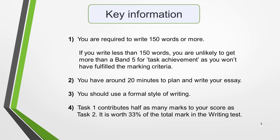First, you're required to write 150 words or more. If you write less than 150 words, you are unlikely to get more than a band 5 for task achievement, as you won't have fulfilled the marking criteria. Second, you have around 20 minutes to plan and write your essay. Third, you should use a formal writing style. And fourth, task 1 contributes half as many marks to your score as task 2, so task 1 is worth 33% of the total mark of the writing test.